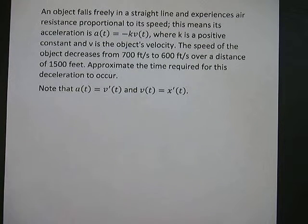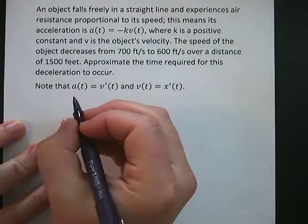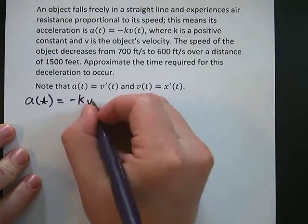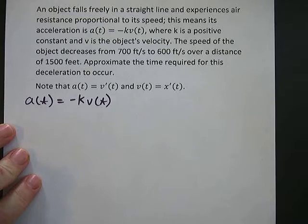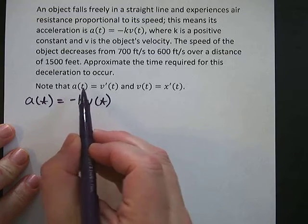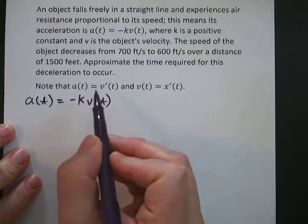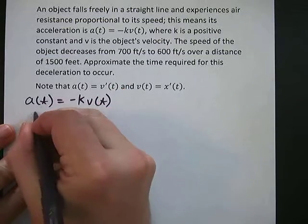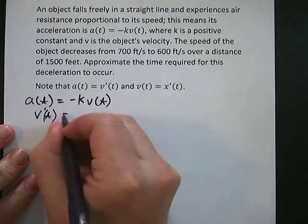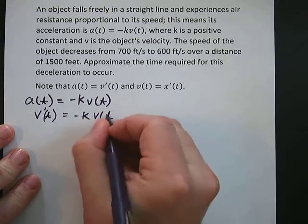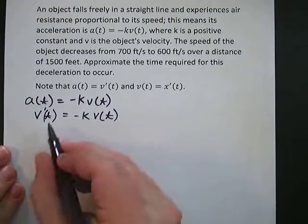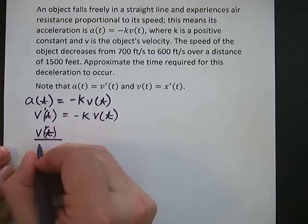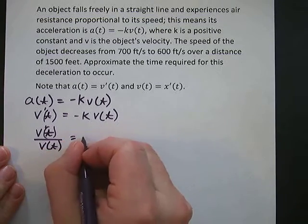There are a few things we need to write down before starting this problem. We know that acceleration equals negative k times v(t) — that was given. We also know that a(t) equals v'(t), meaning acceleration is the derivative of velocity. So v'(t) equals negative k times v(t). Dividing both sides by v(t), we get v'(t) over v(t) equals negative k.